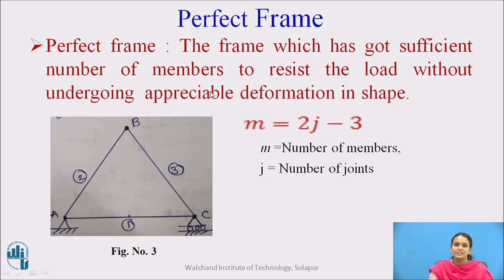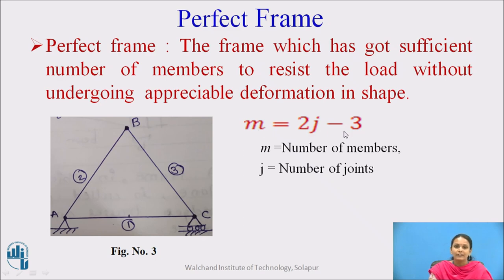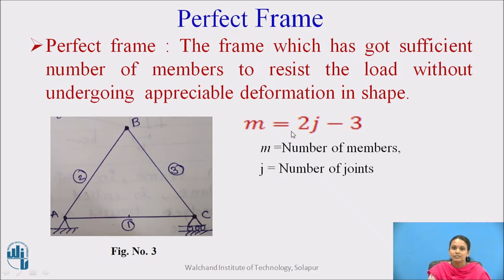A perfect frame has a sufficient number of members to resist loads without undergoing appreciable deformation in shape. To classify frames, we use the equation m = 2j − 3, where m is the number of members and j is the number of joints. For example, a frame with 3 members and 3 joints gives 3 = 3, satisfying the equation — it is a perfect frame.